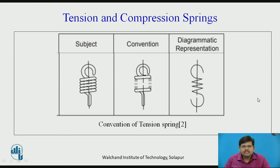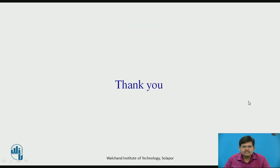Now coming to tension and compression springs. Tension and compression springs are similar in structure, but a tension spring is used to keep two bodies in contact, whereas a compression spring is used to keep two bodies apart. An example of a tension spring is a door with a spring — when you open the door, the spring is stretched, and when you release the door, the door closes. The drawing representation and its convention are shown here. Thank you.